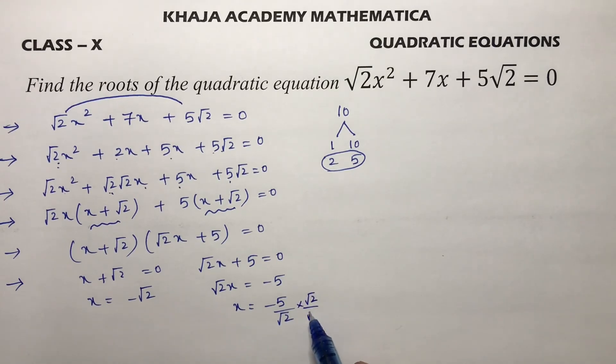Multiply by √2/√2, so you'll get -5√2 by √2 into √2 is 2. So these are the two roots of the given quadratic equation.